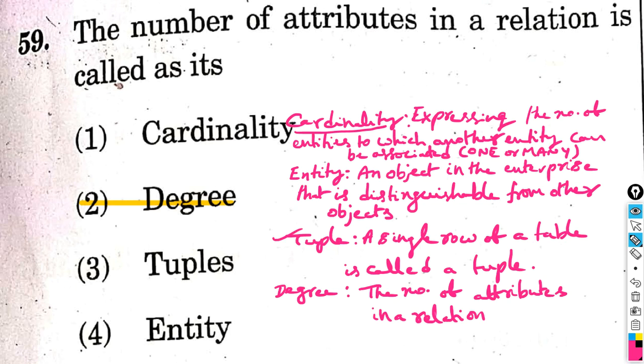Entity is an object in the enterprise that is distinguishable from other objects. For example, in a student database, number of entities include: student number, student name, date of birth. These are independent and distinguishable entities.